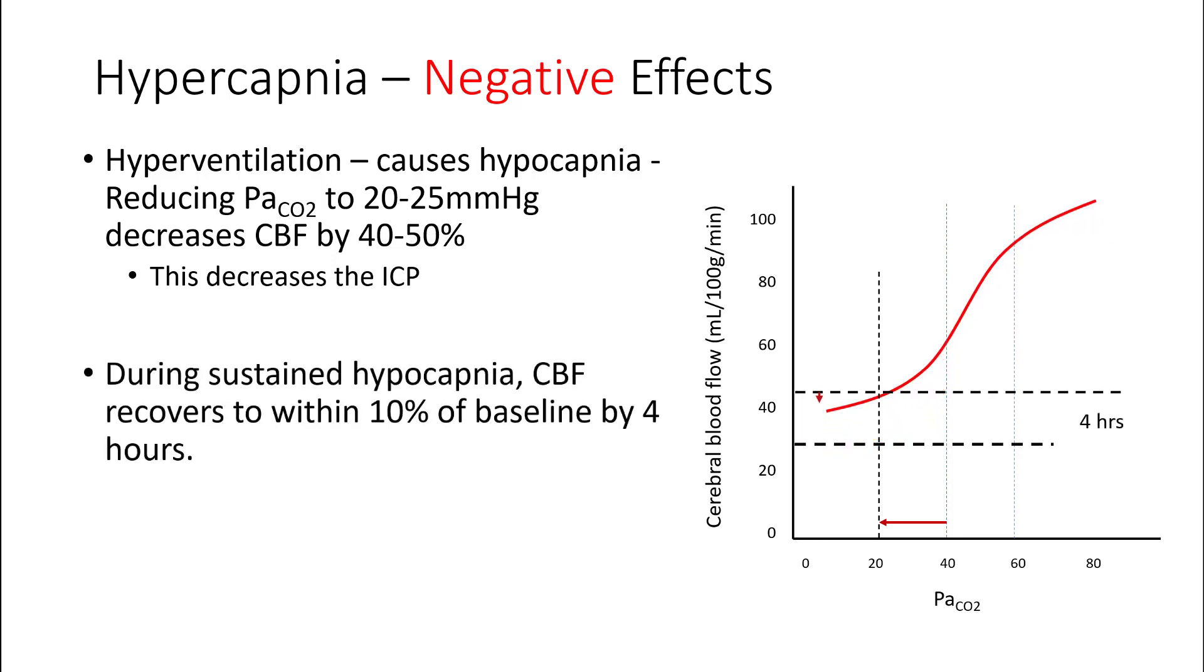However, during sustained hypocapnia, the cerebral blood flow will recover to about 10 percent of its baseline by four hours. Therefore, we use hyperventilation only for acute short-term drop in ICP. In patients with elevated ICP, try to maintain their PCO2 around 40. If you are worried about impending herniation, you can use hyperventilation to your advantage, which will cause a rapid drop in cerebral blood flow and therefore reduce the ICP. Meanwhile, you can institute more definitive treatments like mannitol or hypertonic saline to treat these patients.